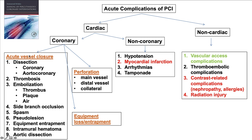Acute vessel closure is one of the three main categories of coronary complications, the other two being perforation and equipment loss or entrapment. Acute vessel closure has several potential causes, such as dissection, thrombosis, embolization, occlusion of a side branch during bifurcation stenting, coronary spasm, pseudo lesions, entrapment of equipment or stent deformation, intramural hematoma, as well as aortic dissection, which is typically not a complication of PCI but can manifest as acute coronary syndrome.